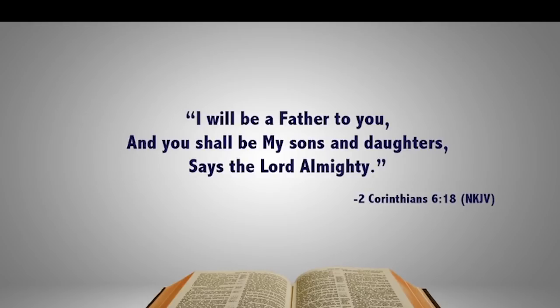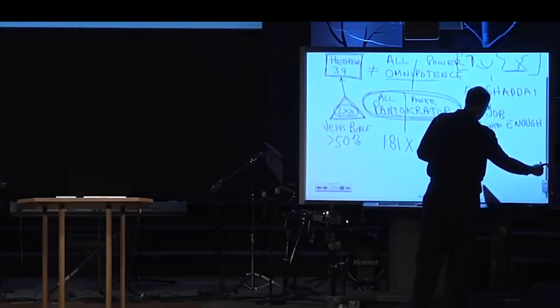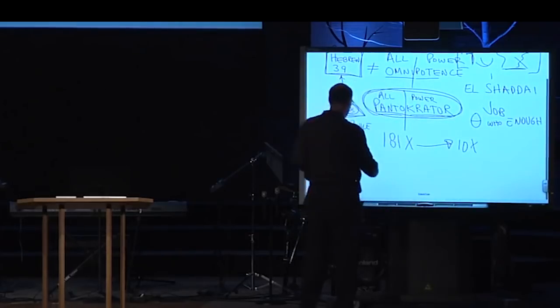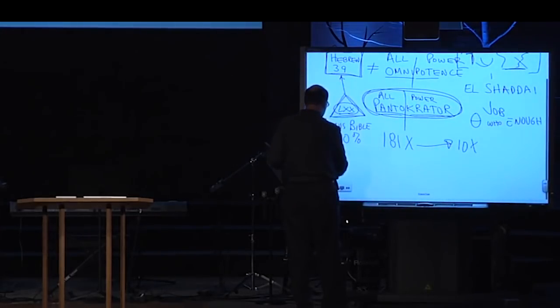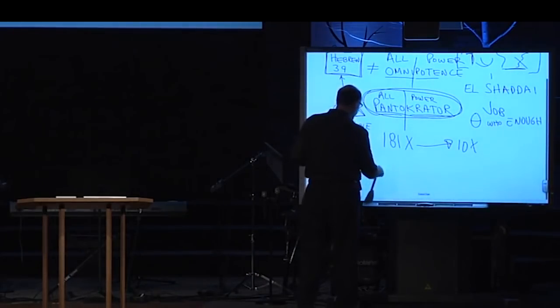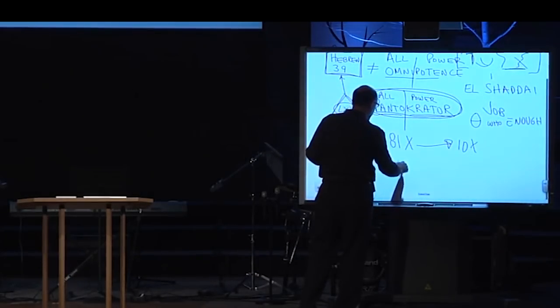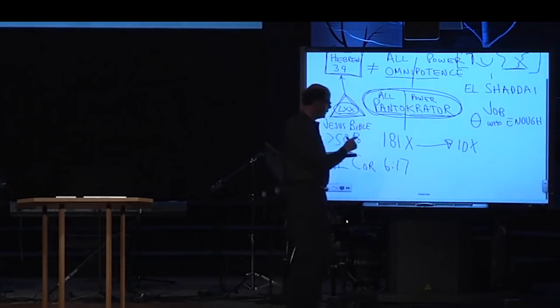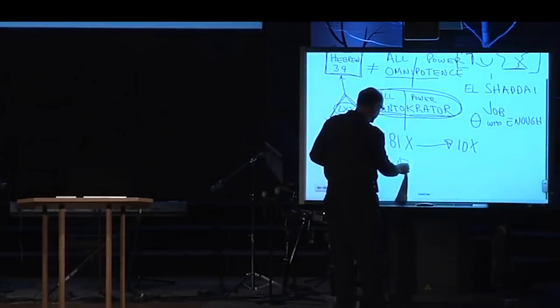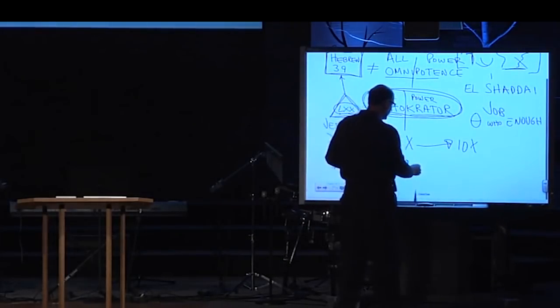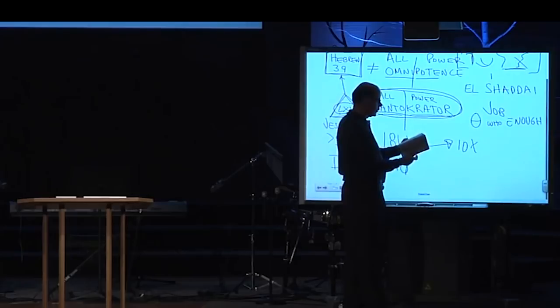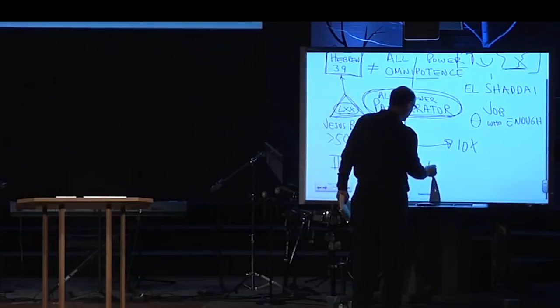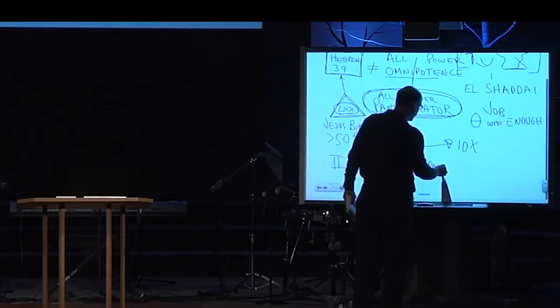Verse 17: 'Therefore come out from among them and be separate, says the Lord, and don't touch what is unclean and I will receive you.' And now he has moved along to quoting from Isaiah and from Ezekiel. But now look at verse 18: 'And I will be a Father to you, and you shall be my sons and daughters, says the Lord Almighty.' Now here in 2 Corinthians 6:18 is the first mention of the word omnipotent. And this word right there, the very last word of verse 18, is all or omni, powerful or potent.